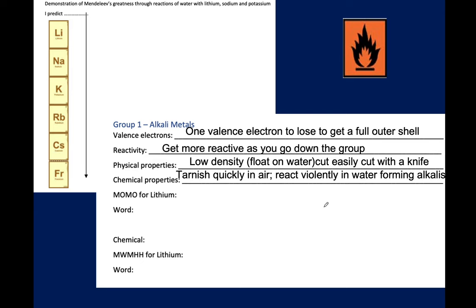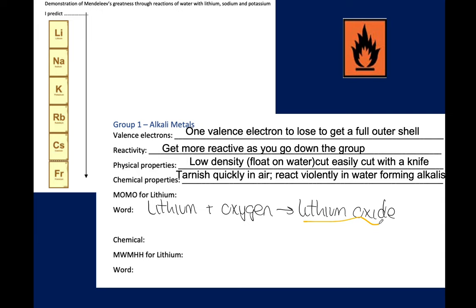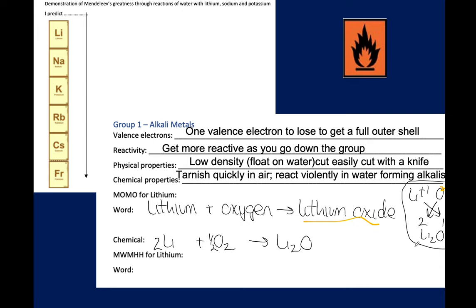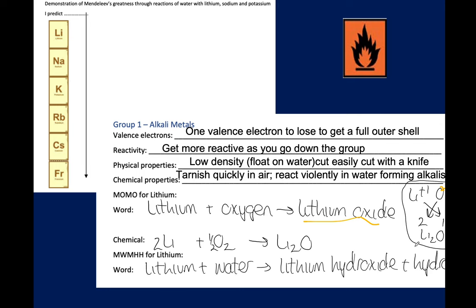In terms of chemical properties, alkali metals react with air — this is our MOMO reaction — and they react with water forming alkalis, which is Men Wear Many Hats Hopelessly. For lithium reacting with oxygen: lithium plus oxygen gives lithium oxide. Using the drop-down method, oxygen is O²⁻, giving a 2-to-1 Li₂O ratio. For the water reaction: lithium plus water gives lithium hydroxide plus hydrogen gas. Hydroxide is a complex ion with a charge of negative 1, giving a 1-to-1 ratio, then we balance.